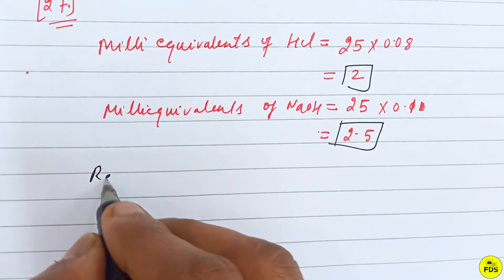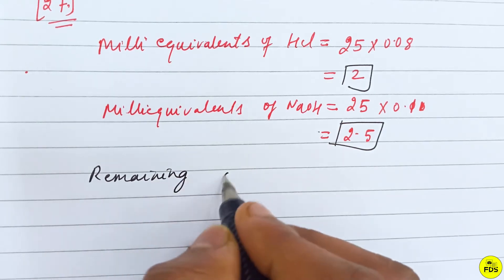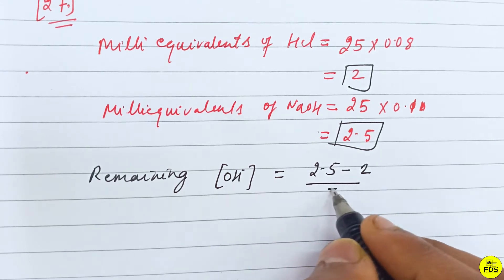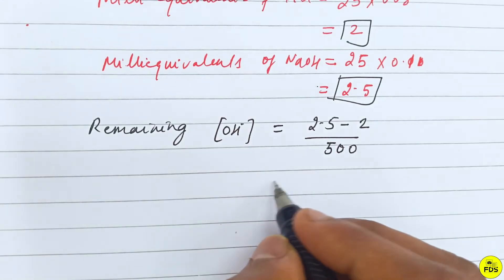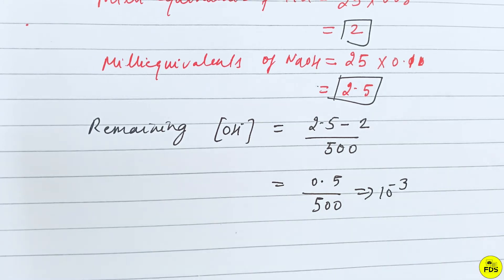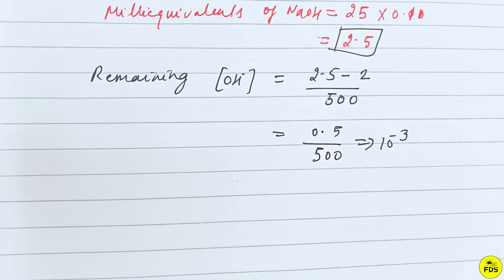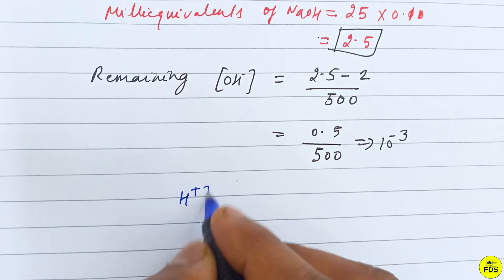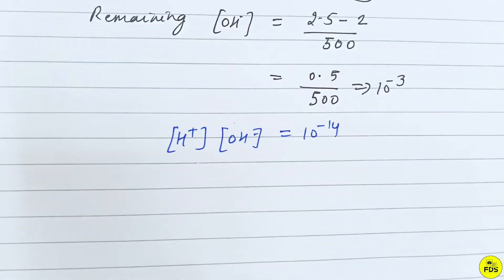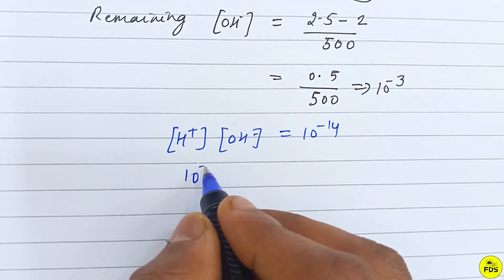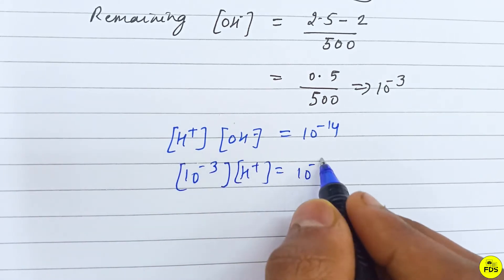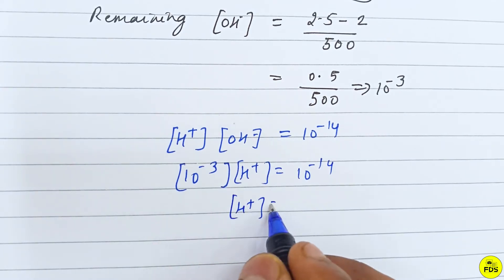Remaining OH⁻ concentration equals (2.5 minus 2) divided by total volume 500 mL. This equals 0.5 divided by 500, which equals 10 to the power minus 3.